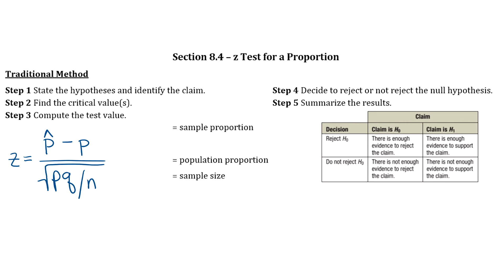We already know what all that stuff stands for — it's the same as when we learned confidence intervals for proportions. P-hat is your sample proportion, that's x over n, where x is the number of people who have the characteristic you're talking about. Your population proportion is the lowercase p, and n is your sample size.